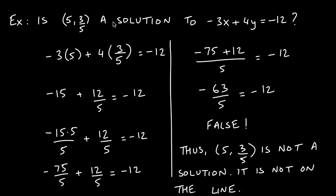One way to check would be to graph the line and see if it passes through the point — but what if the point is so close to the line that you can't tell them apart? You might get a false positive. So we need an algebraic, sure-shot way of determining whether a point is on a line, which means checking if it's a solution to the equation.